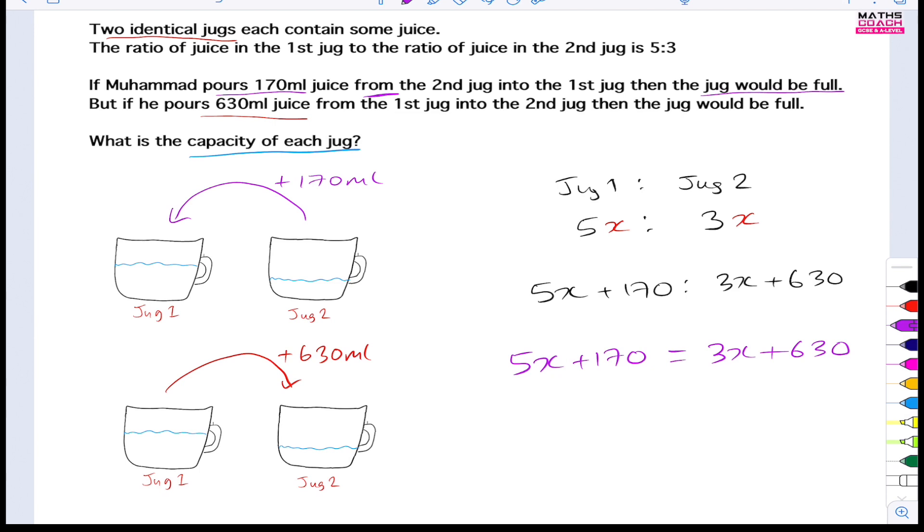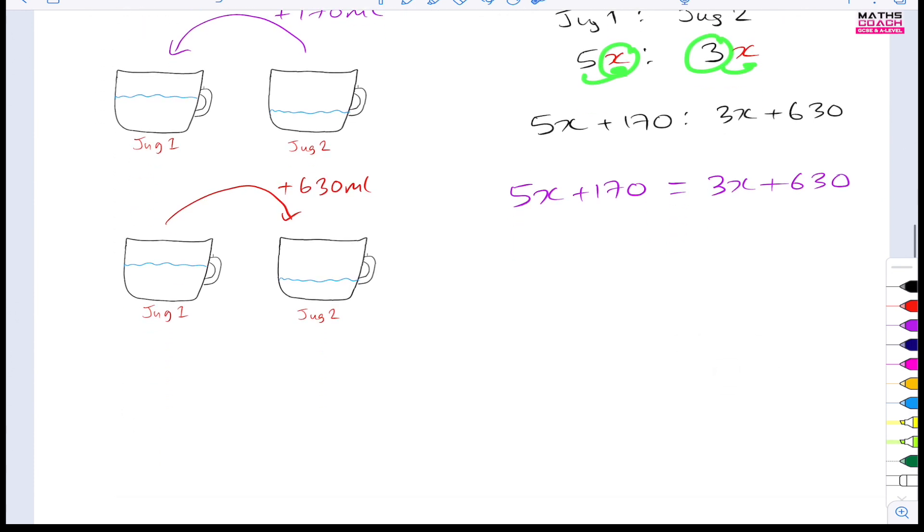Now all we have to do is solve this and find x. So let's go ahead and work this out. What do we do first? We take the 3x over to this side, we take the 170 over to that side. That gives us 2x, and 630 take away 170 - we could do that on our calculator, this is from a calculator paper - so 630 take away 170 gives us 460. And then we divide by 2, so 460 divided by 2 is 230 milliliters.